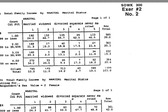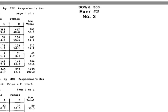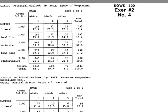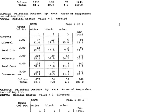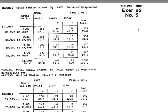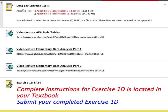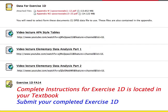Here we go. As you can see in your book, you're going to see these different Exercise SPSS data files. Each page is a different one — here's number two, number three, number four. They all have rows and columns; these are examples of SPSS output data files. You need to pick one of these — not all of them, just pick one that you have a preference for so you can complete Exercise 1d. You're going to select one SPSS data output file to work with.